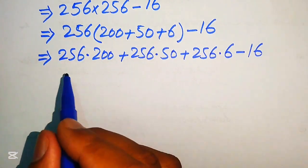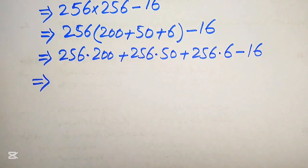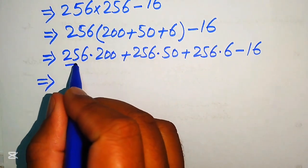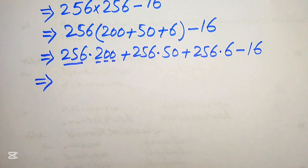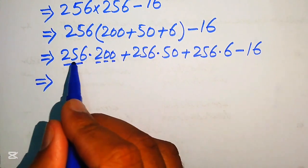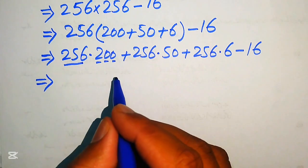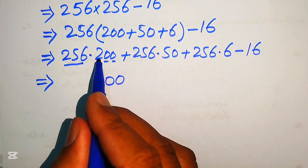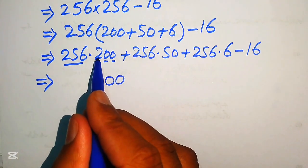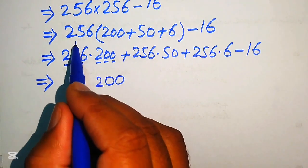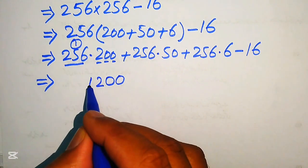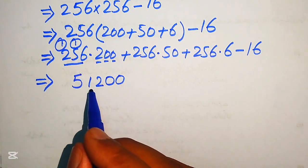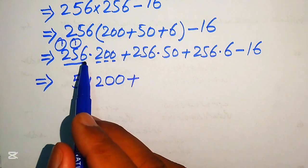Here is the trick to multiply these numbers without any calculation. For 256×200: multiplying the two zeros gives zeros at the end. Then we multiply 2×6=12, write 2 carry 1; 2×5=10, plus 1 is 11, write 1 carry 1; 2×2=4, plus 1 is 5. So 256×200 equals 51,200.